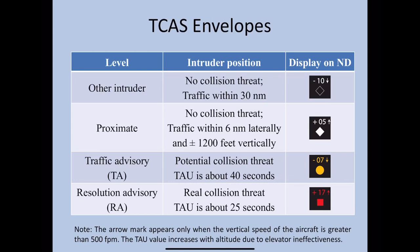The numbers displayed — such as minus 10 or plus 05 — indicate the altitude of the other aircraft relative to your aircraft. If it's minus 10, that aircraft is 1000 feet below you; if it's plus 05, it's 500 feet above you. An arrow mark indicates whether the other aircraft is descending or climbing. This arrow mark appears only when the vertical speed of that aircraft is greater than 500 feet per minute.